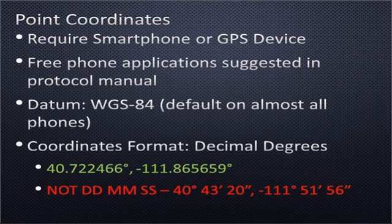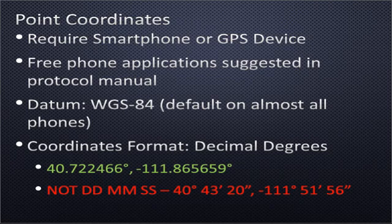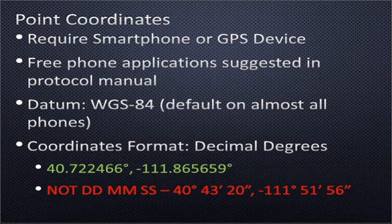At each survey point we ask that you write down the coordinates. There are a number of free smartphone applications for both iPhone and Android suggested in the protocol guide, or if you have a GPS device that's great as well. The datum we use is WGS 84, which is the default on almost all phones, so if you're using a smartphone application you should be fine. If you're using a GPS device, please change it to WGS 84. For the coordinate format, we use decimal degrees — a large number with a single decimal point, no spaces. For example, latitude 40.722466, and we ask that you go at least five digits past the decimal point.